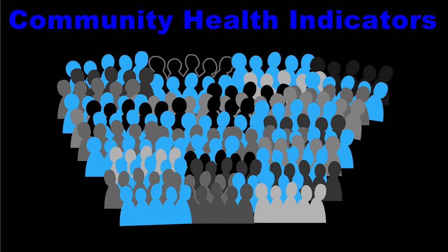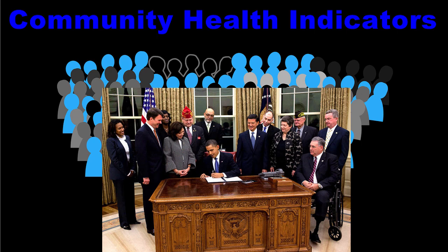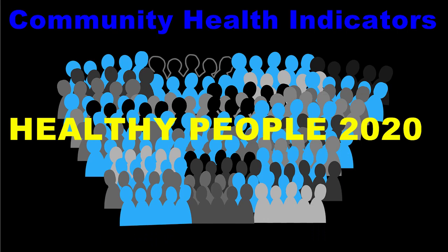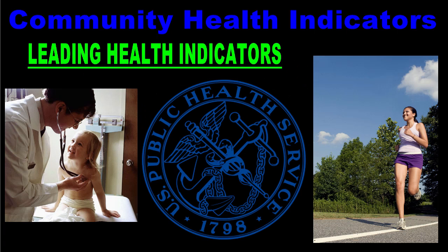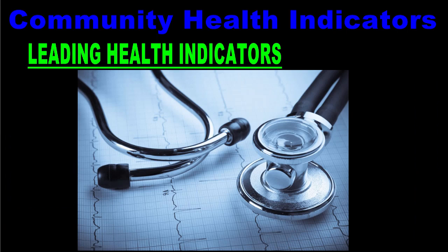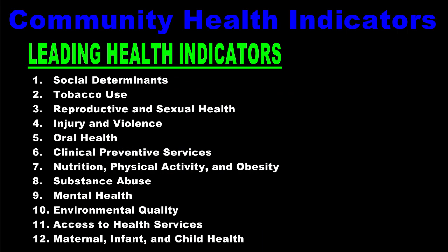In order to promote healthy communities in the United States, the federal government wrote a plan called Healthy People. The current plan, known as Healthy People 2020, identifies 12 major public health concerns in the U.S. called leading health indicators. These leading health indicators outline the most important information we can look at to determine the relative healthiness of different communities within the United States. They provide a means for us to measure good health so we can improve the overall health of our people. Let's take a close look at each one of the leading health indicators so we can be familiar with them.